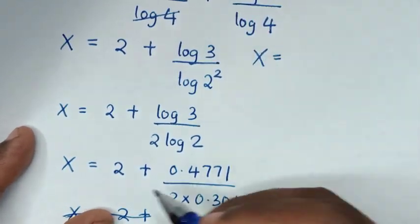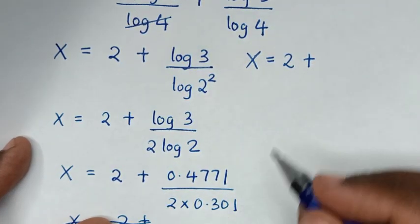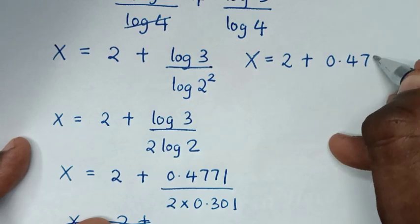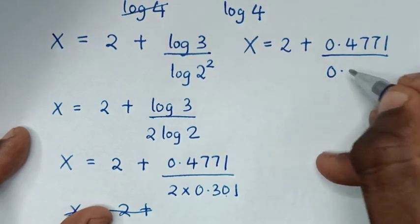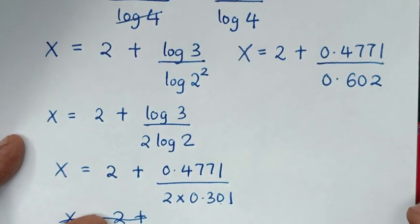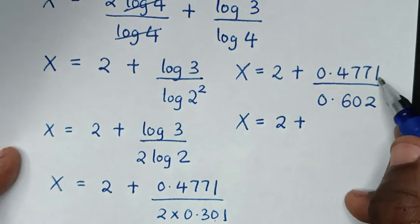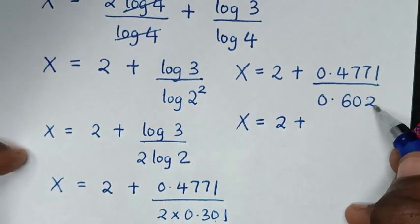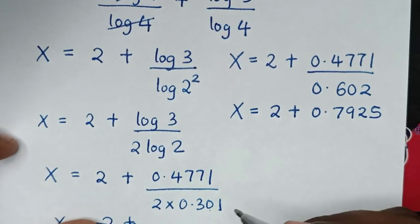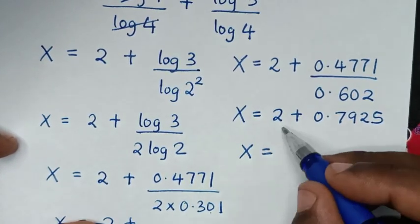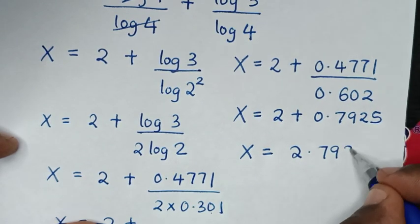It will be x is equal to 2, then plus 0.4771 divided by 0.602. So it will be 2 plus 0.4771 over 0.602, which is 0.7925. Then x is equal to 2 plus 0.7925, giving 2.7925.